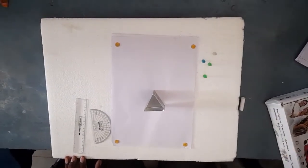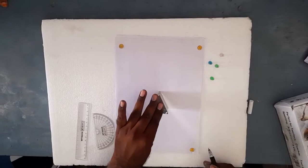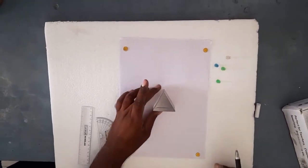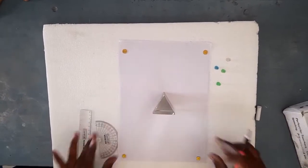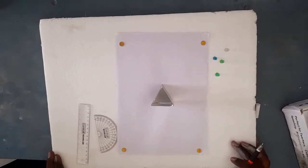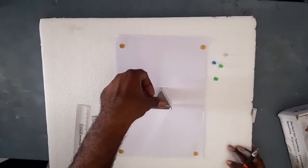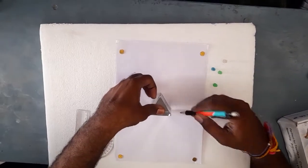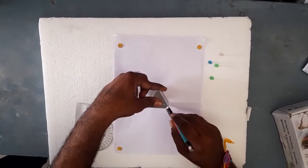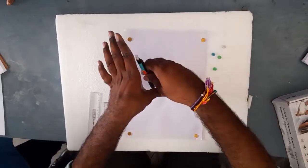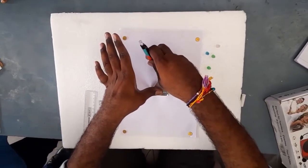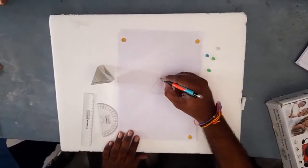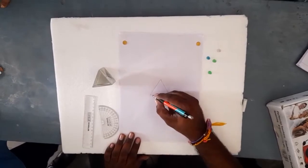Now for the procedure: First step, take an equilateral triangular prism and place it at the middle of the paper. Hold the prism like this and draw the outline of the prism.